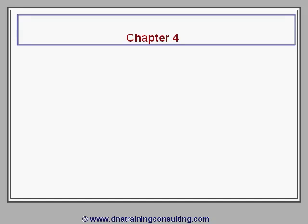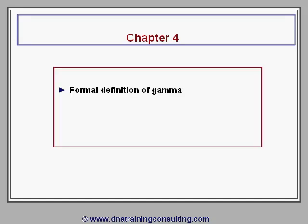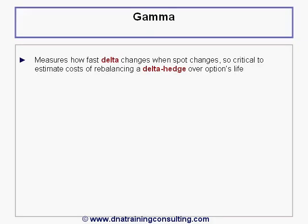Chapter 4 formally defines gamma and examines its factor sensitivities, particularly to changes in spot and in the option's remaining time to expiration. Gamma is a measurement of how fast delta changes, and therefore is critical to understanding the likely cost of delta hedging, especially in markets that are less liquid and more volatile.